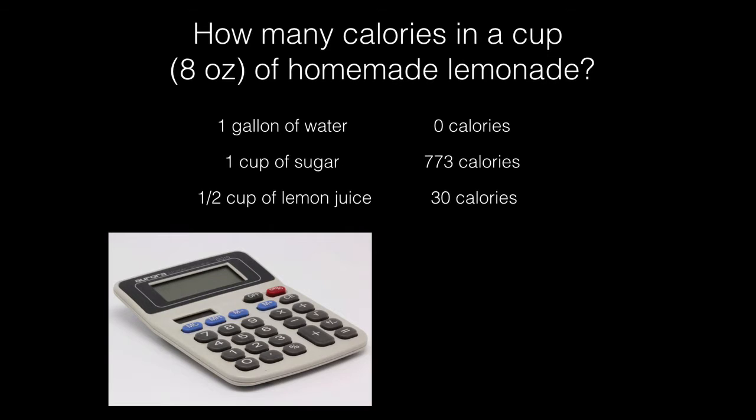And then we have our half cup of lemon juice to complete our recipe, and that equals 30 calories for one half cup of lemon juice. When we add all that together, we get 803 calories. Now to convert to one cup, this is easy. We know that one gallon equals 16 cups.